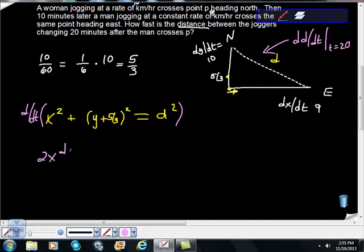and I get 2x dx dt plus 2 times y plus 5 thirds times dy dt, right? Is equal to 2d dd dt.